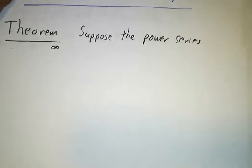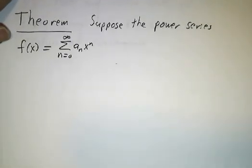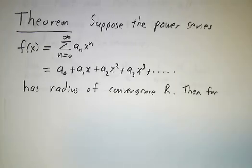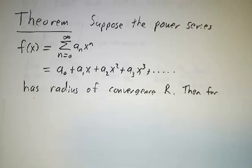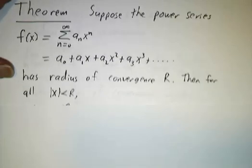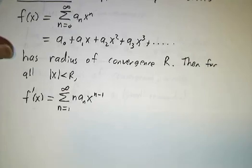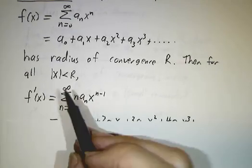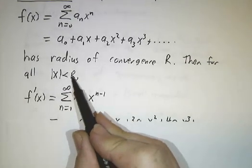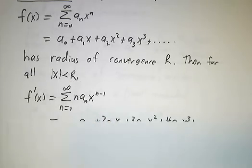So here's the big theorem. Let's suppose that you've got a function that's represented by a power series, and let's suppose that power series has a radius of convergence R. Then as long as we are within the radius of convergence, not on the boundary, not outside, you have to be strictly inside the radius of convergence.